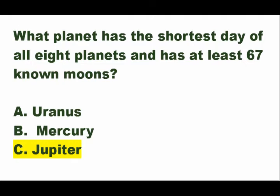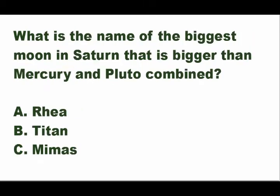Jupiter is the planet with the shortest day of all eight planets and has at least 67 known moons — a lot of moons!